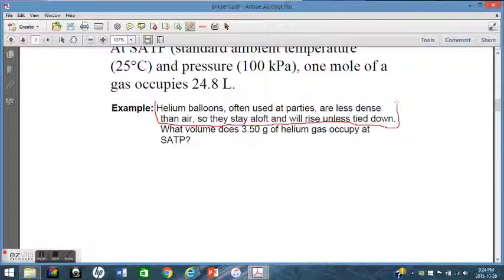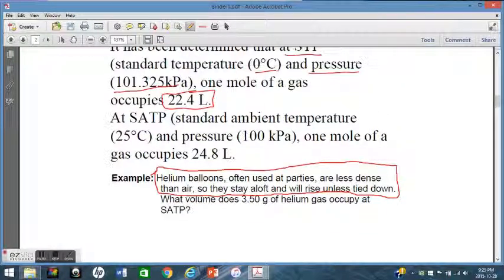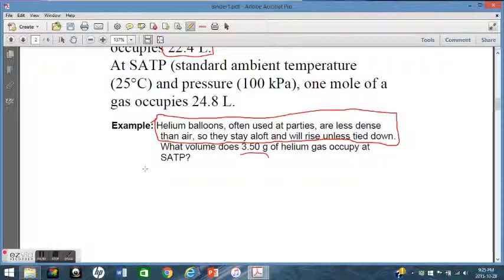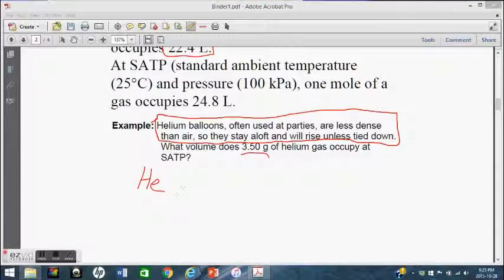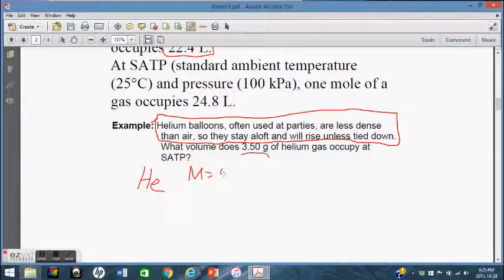In this case here, we say, what volume does 3.50 grams of helium gas occupy at SATP? So we have to go, how many moles is this? So we look at helium. We need to find its molar mass. If you look on your periodic table, big M is equal to 4.00 grams per mole.